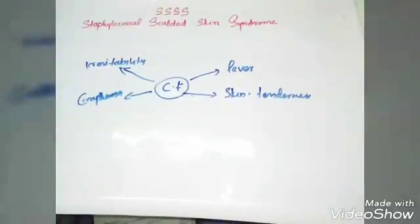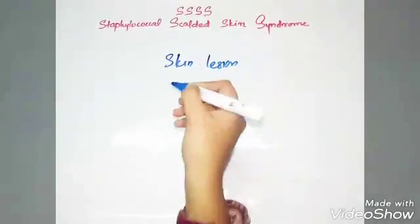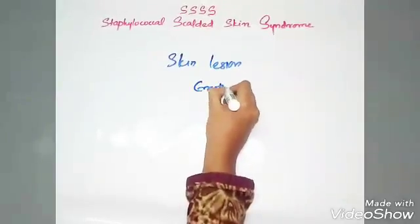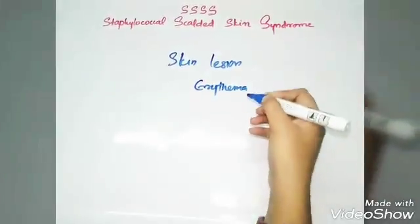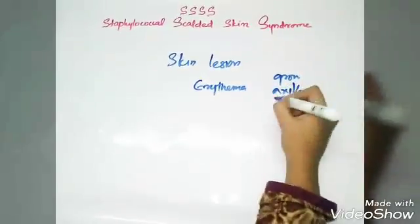And many other systemic disturbances. Baby showing staphylococcal scalded skin syndrome skin lesion, it starts as erythema, usually begins at groin, axilla, or around mouth.